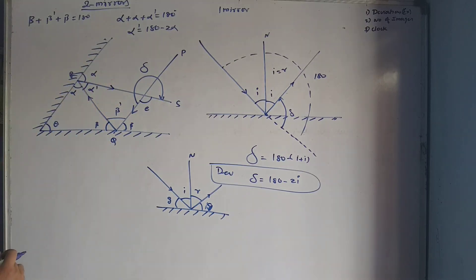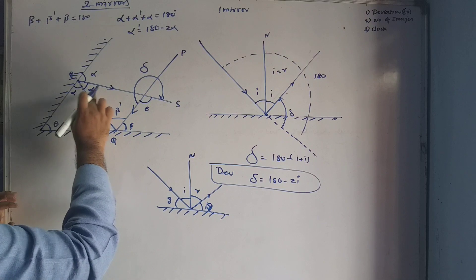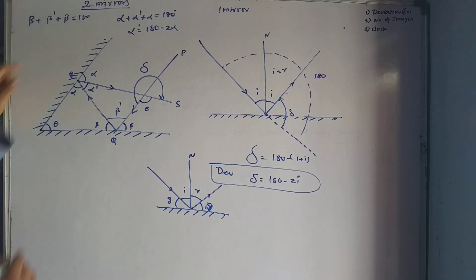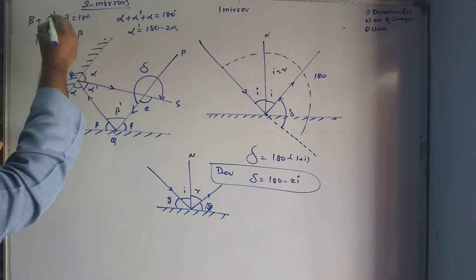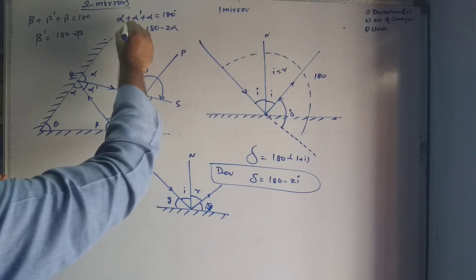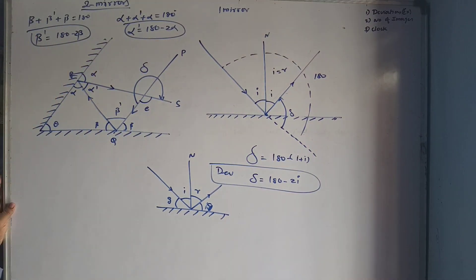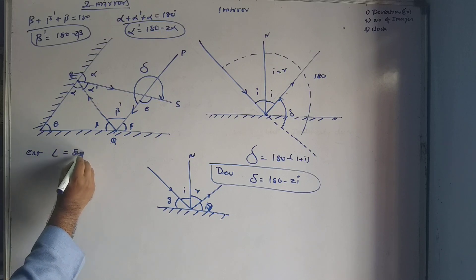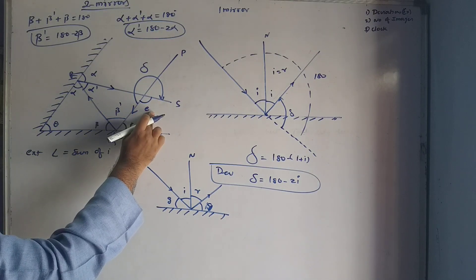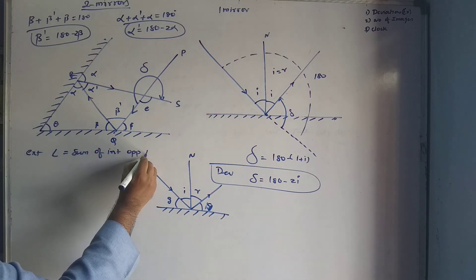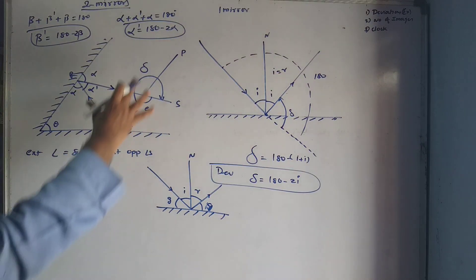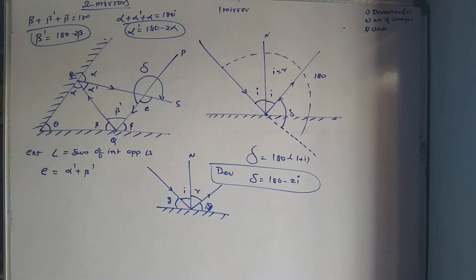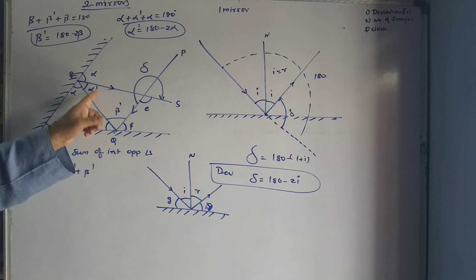From that, alpha dash equals 180 minus 2 alpha. Similarly, beta plus beta dash plus beta equals 180 degrees, because a plane mirror makes a total angle of 180 degrees. So beta dash equals 180 minus 2 beta. Now, using the exterior angle theorem: the exterior angle of a triangle equals the sum of the two interior opposite angles. In this diagram, e is the exterior angle, so e equals alpha dash plus beta dash.